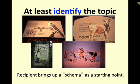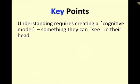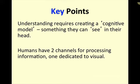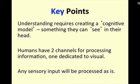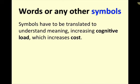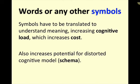Visuals are absolutely critical — it's a form that the mind wants the information in, in order to absorb it. Key points: understanding requires creating a cognitive model, something that the person can see in their head. Humans have two channels for processing information; one is dedicated entirely to visual information. Visual is the most important to most people. Offering information firsthand that can be gathered through the senses lowers cognitive load — we also trust it more, and there's less possibility of distortion. Words, or any other symbols, have to be translated to understand meaning, which increases the cognitive load, increases the cost, and increases the potential for distorted cognitive models and distorted schemas.